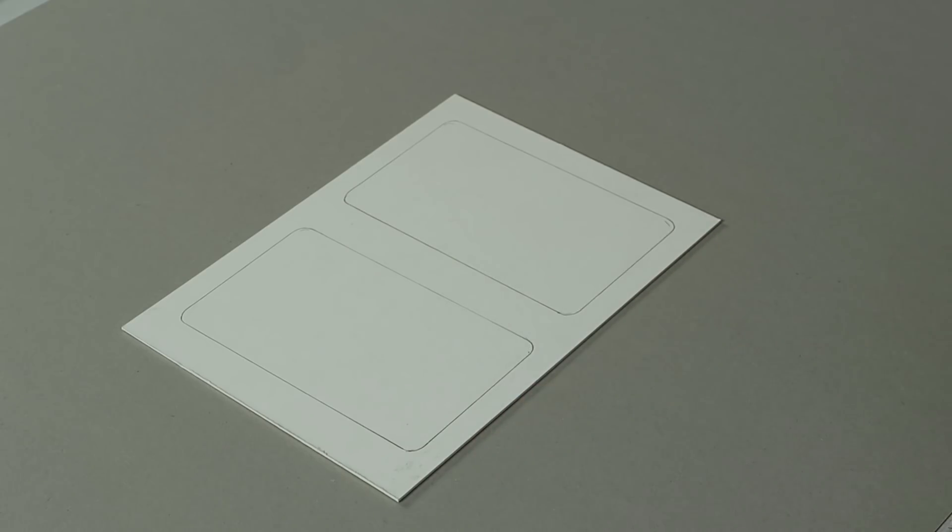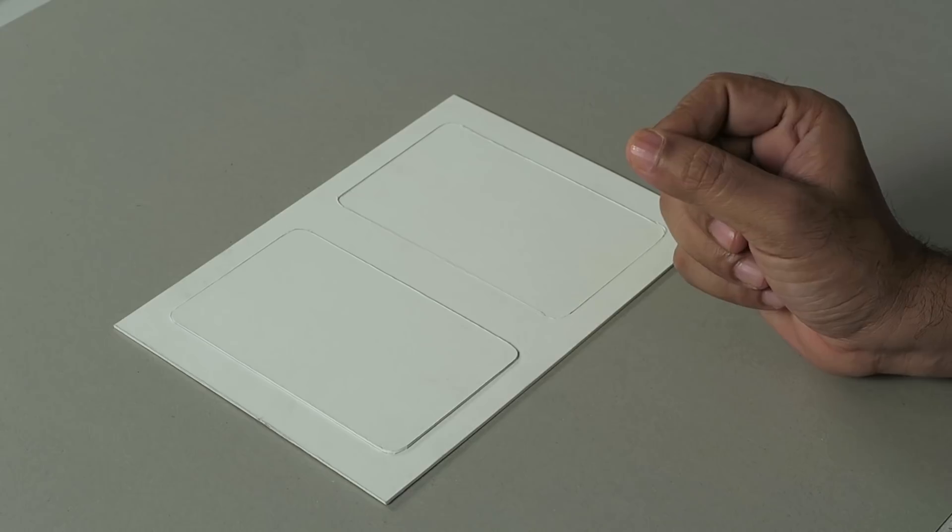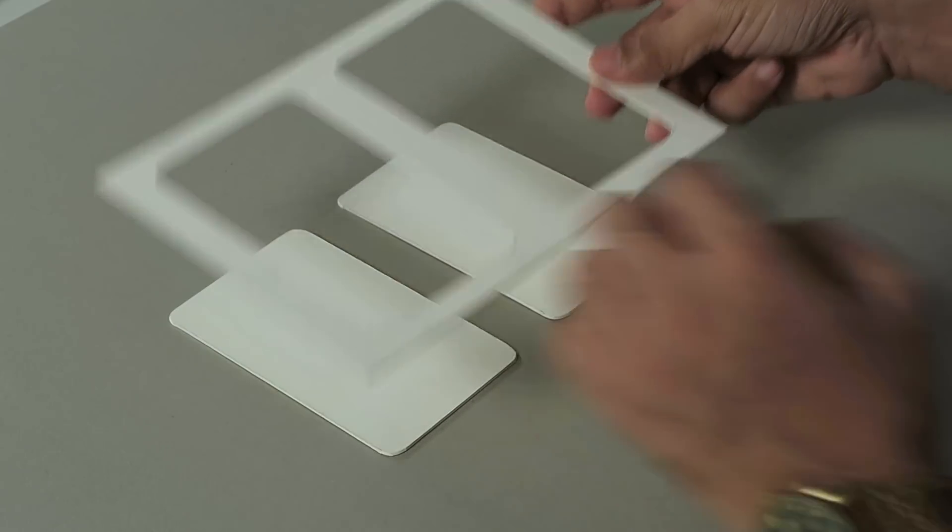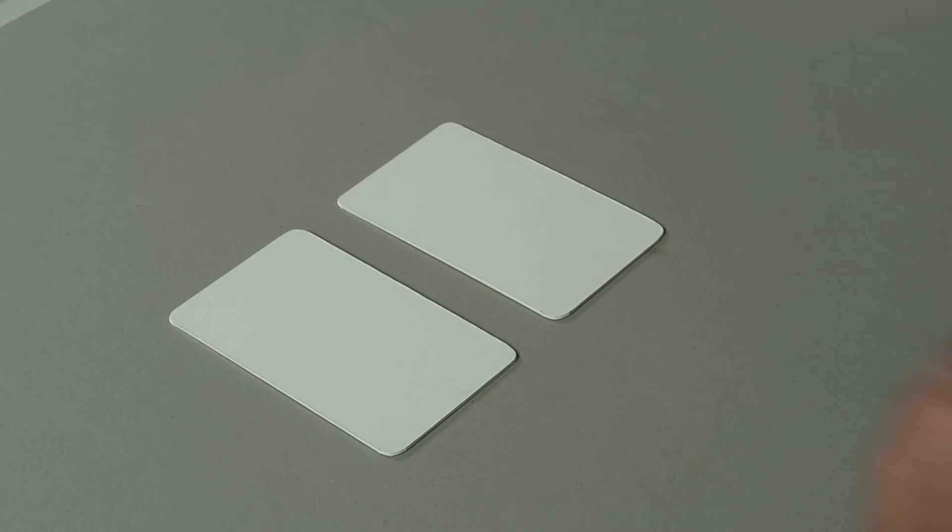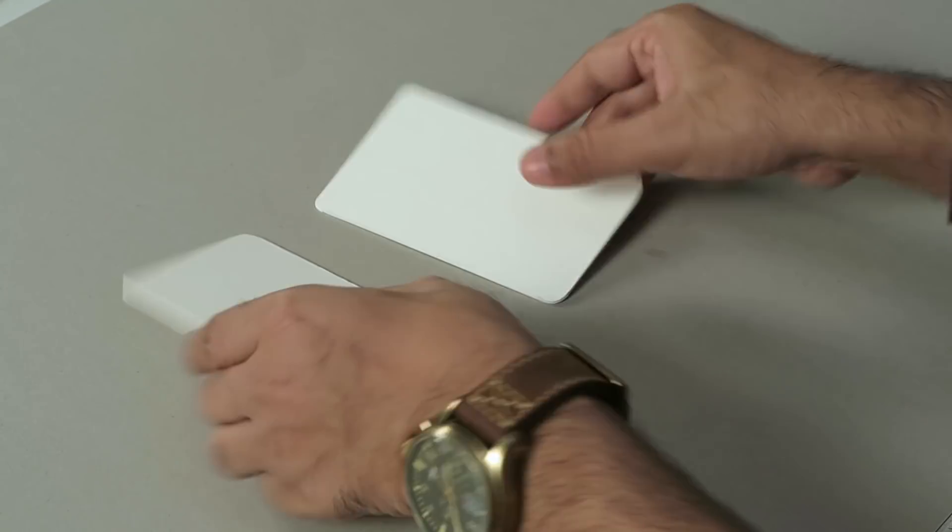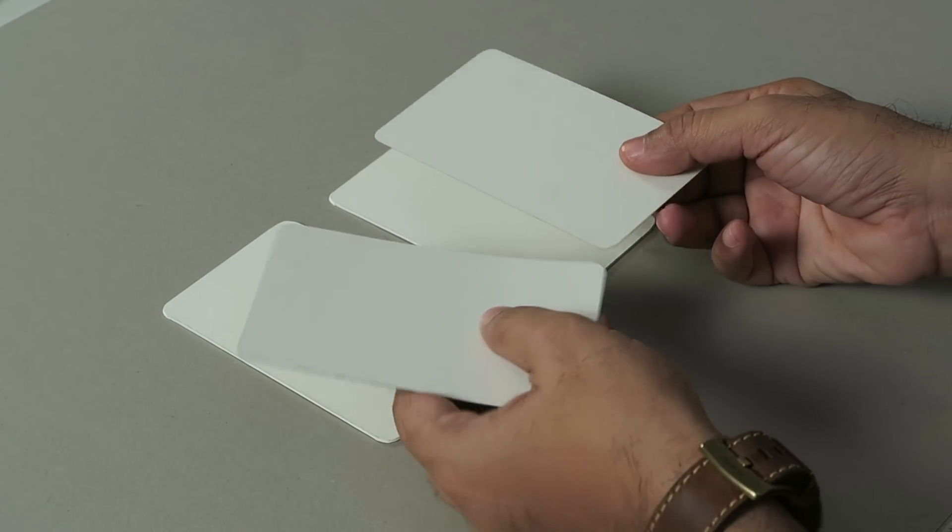So here you go. So you can cut it using a cutter or scissor, but I am going to do it with the power of editing. Alright, you can see that we have cut it out cleanly. So now I have two pieces of mount board and I have two pieces of box board.